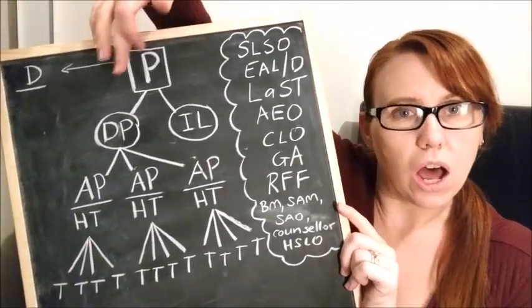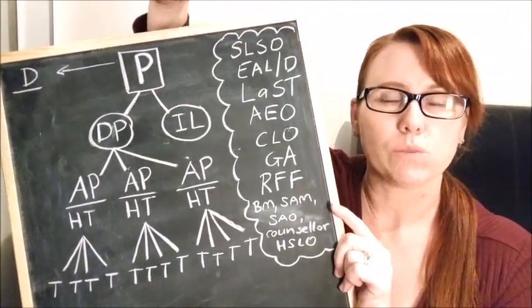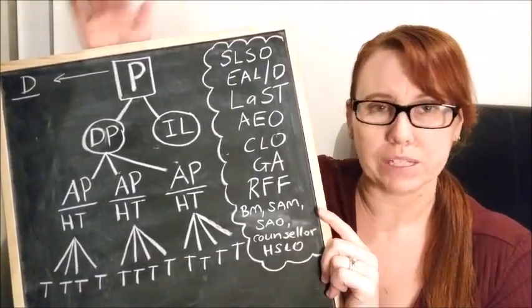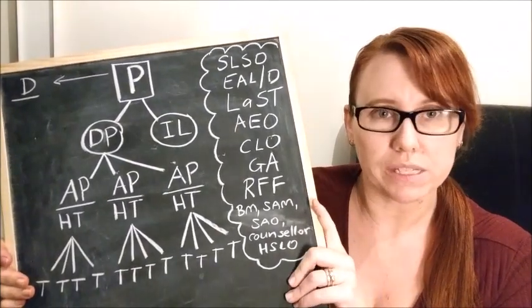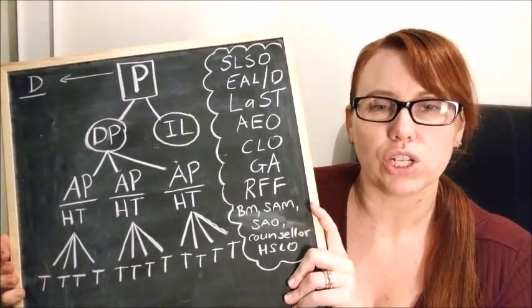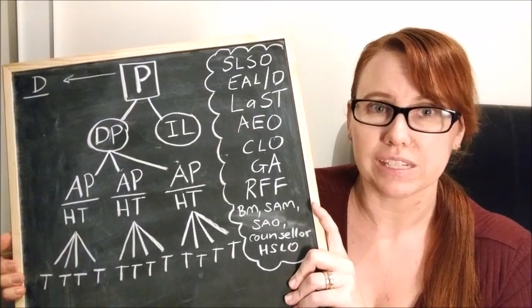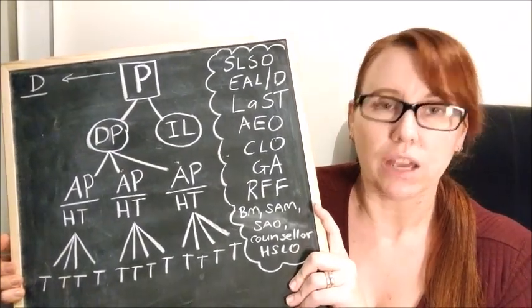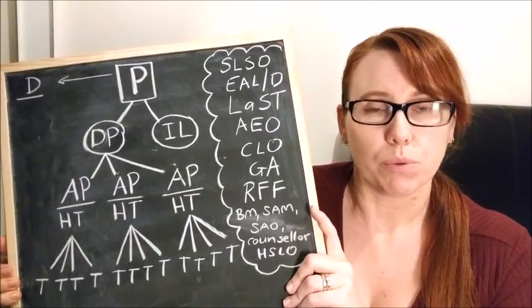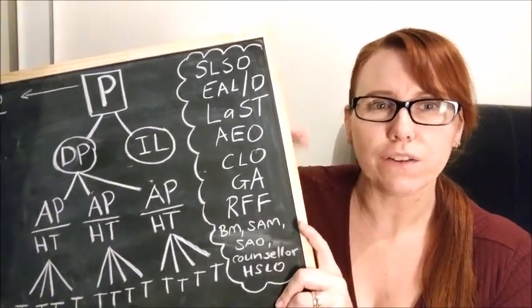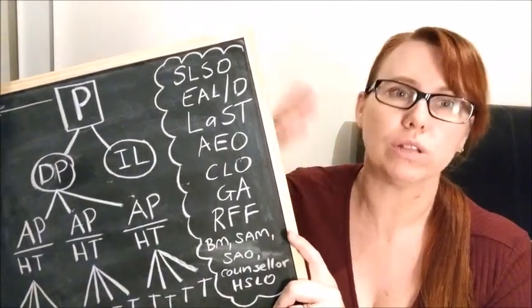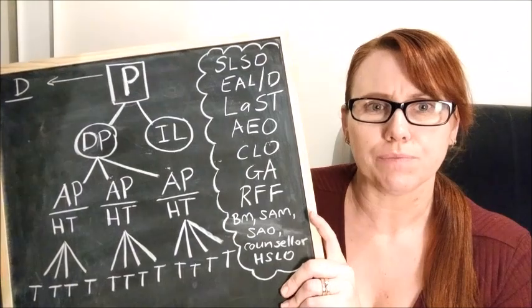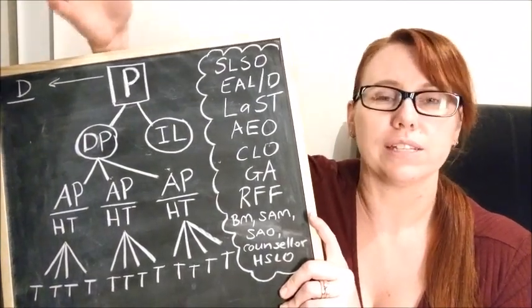Sitting in line with the deputy principal is what we call an instructional leader. This is a deputy principal level position, it's just not a permanent position. These are contracted positions. Some positions are allocated if you are an early action for success school. That's part of the literacy and numeracy strategy. And some schools choose to employ their own.